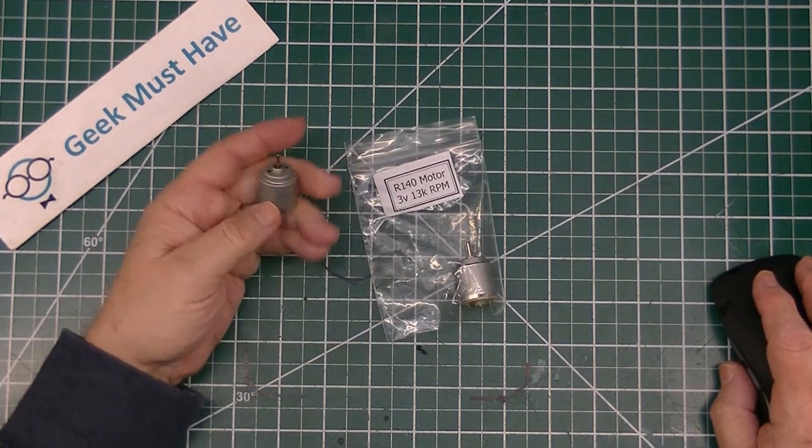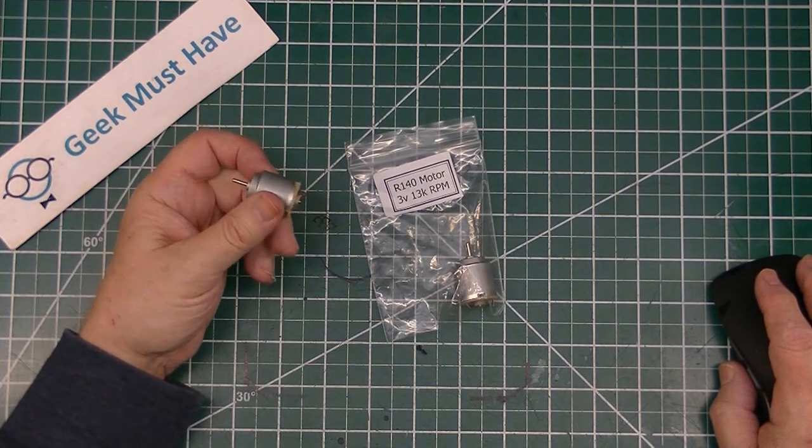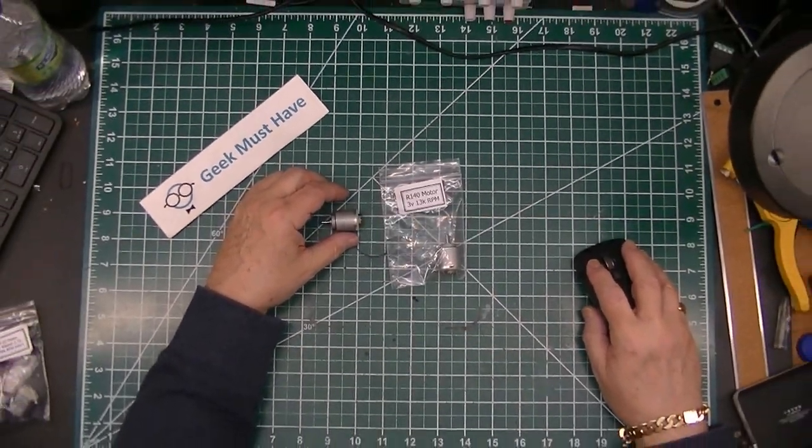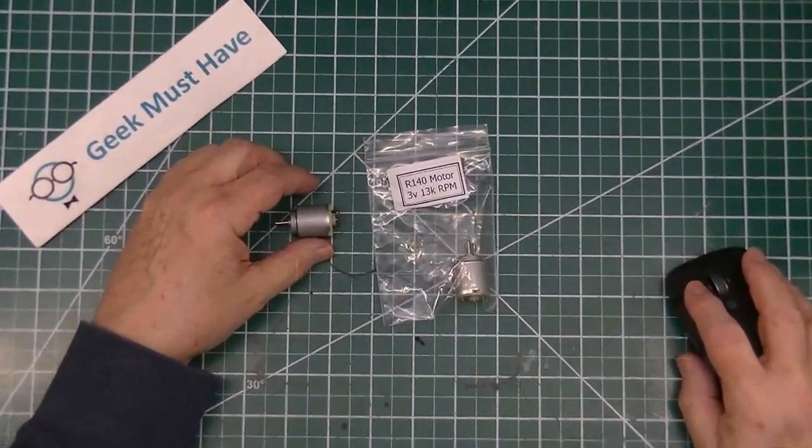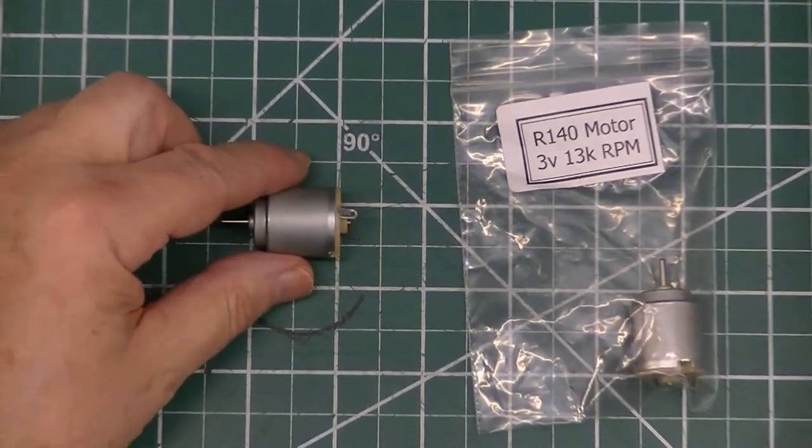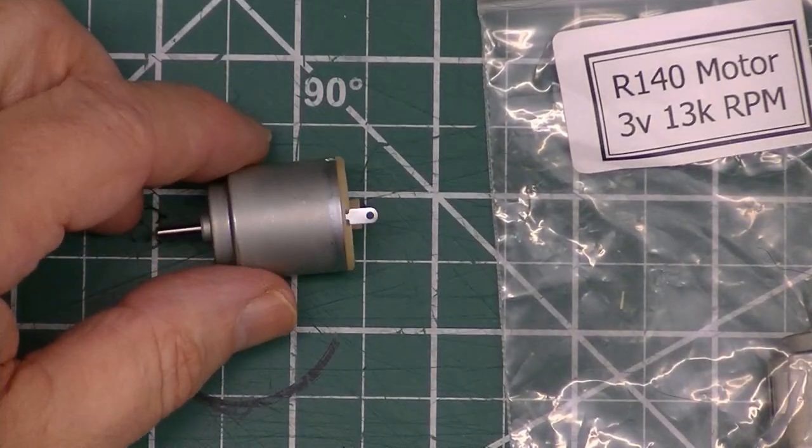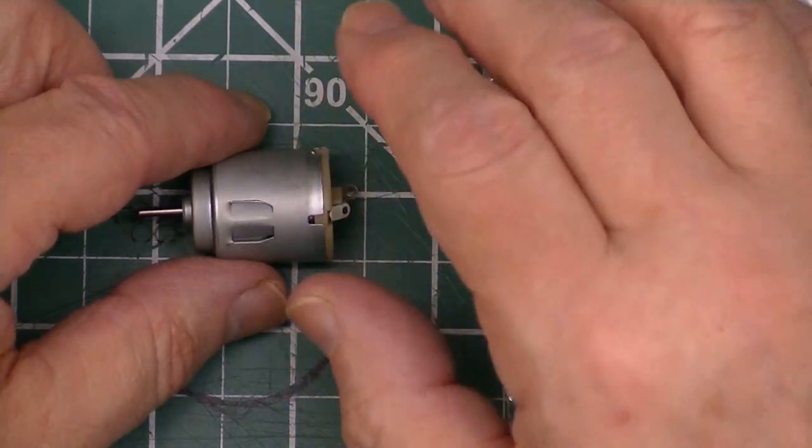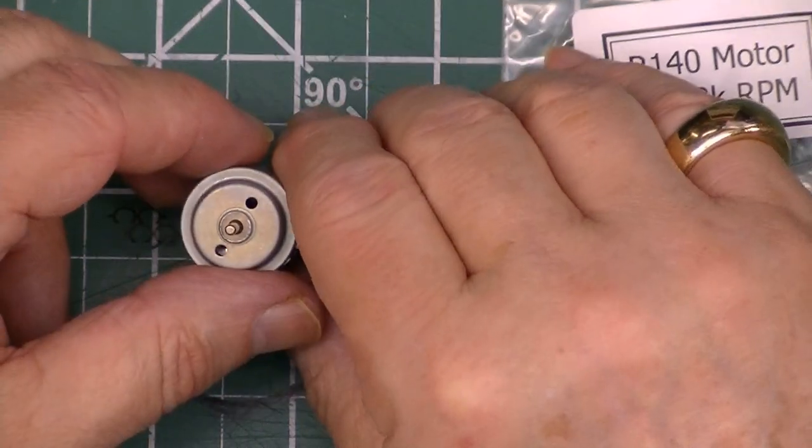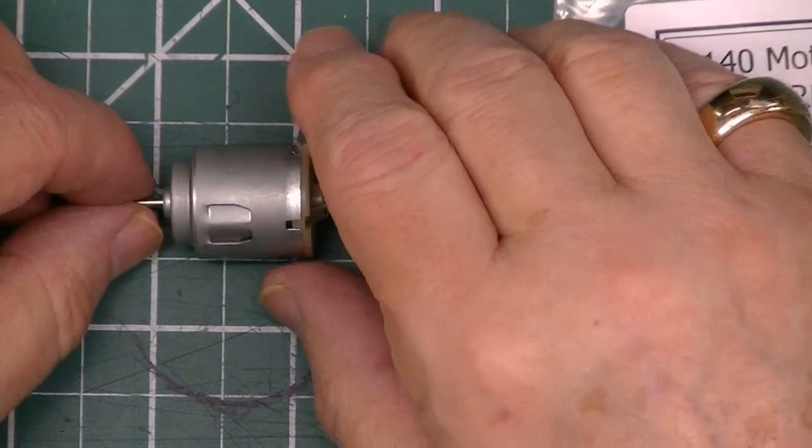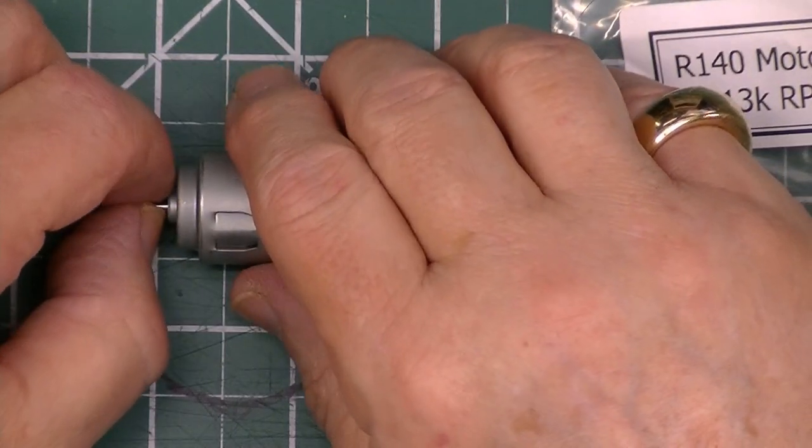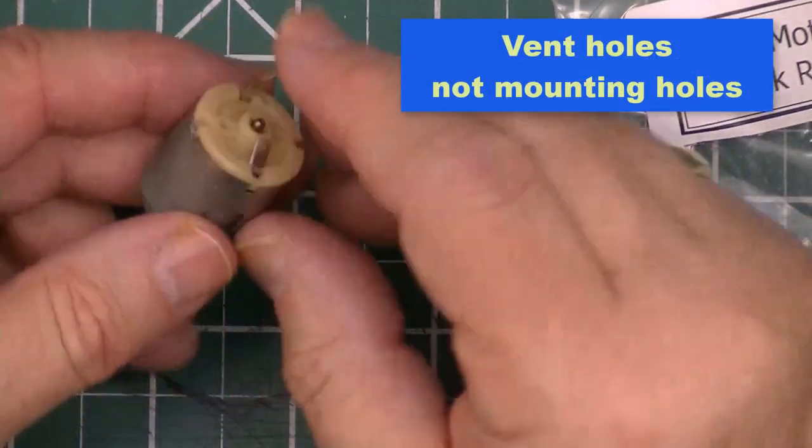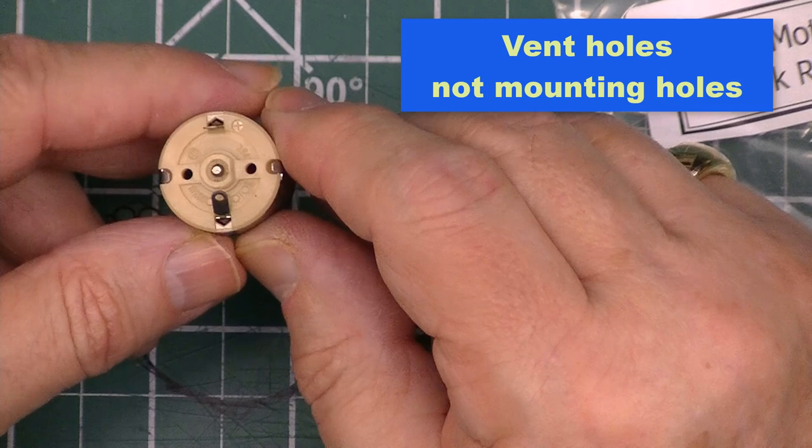This item is the R140 motor. It runs on 3 volts. It's a completely round motor, doesn't have any flat sides on it whatsoever. It has a speed of about 13,000 RPM and a 2 millimeter shaft on it. It has holes in the front to mount it and holes in the back to mount it.